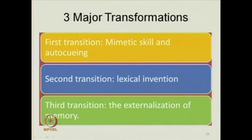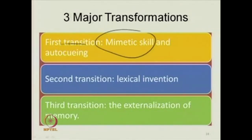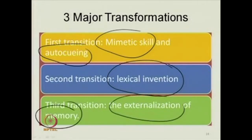The first transition entailed a kind of skill known as mimetic skill and auto-cueing — these are the two features of the first phase. The second transition involves, in the main, lexical invention. And the third transition was the externalization of memory. The effects of these transformations were: there were new uniquely human systems of memory representation, and there were three interwoven layers of human culture, each supported by a corresponding set of representations.